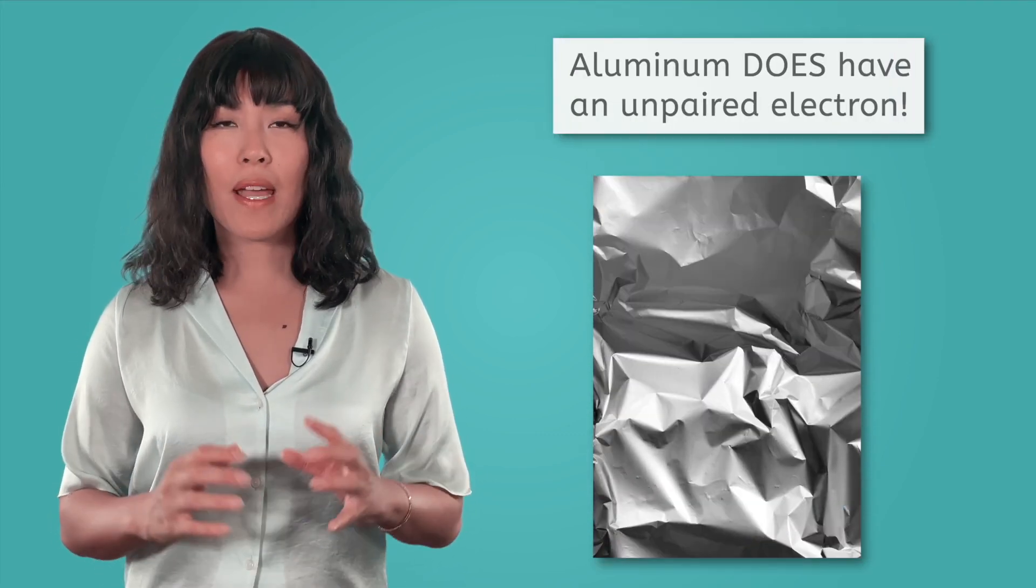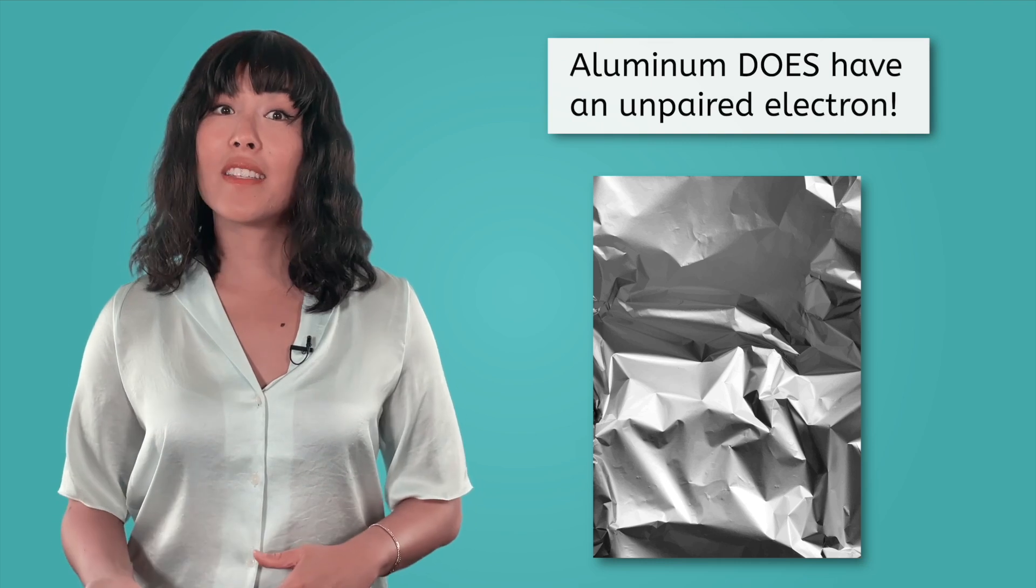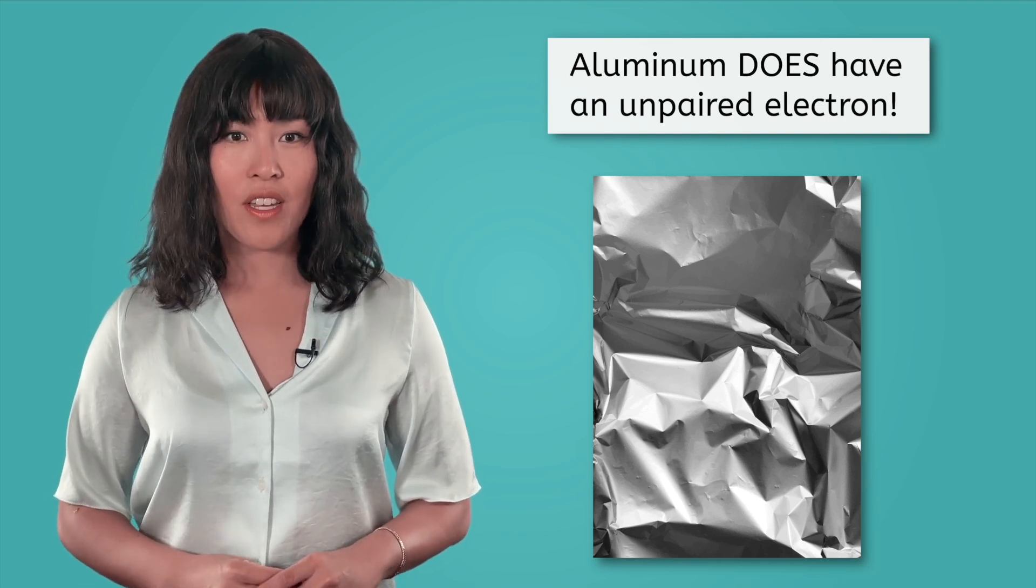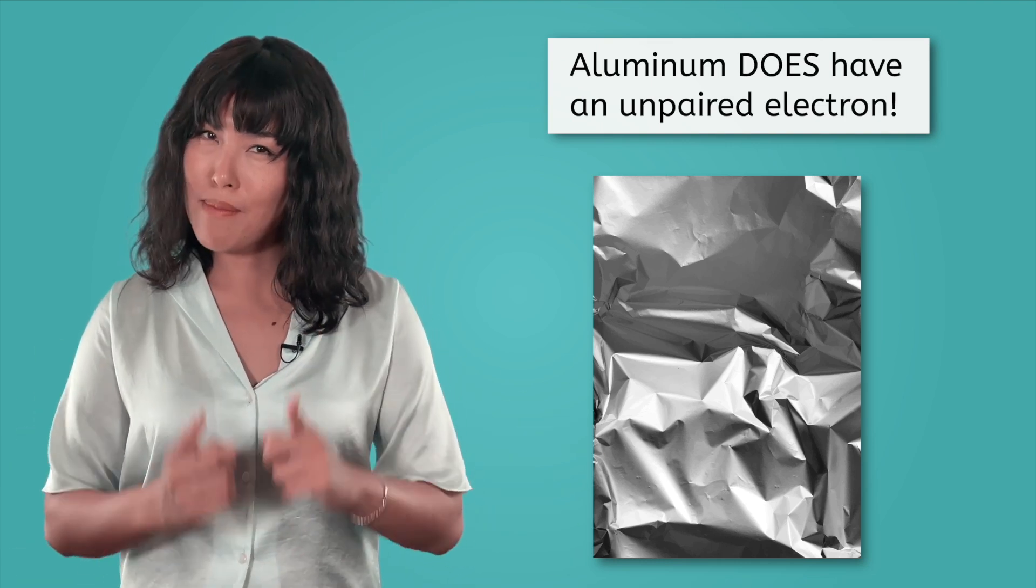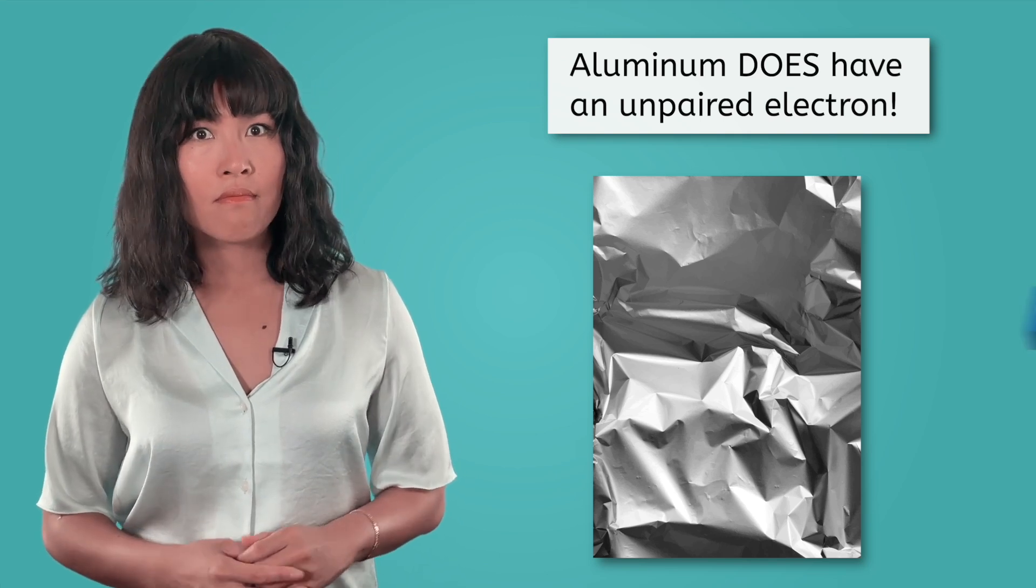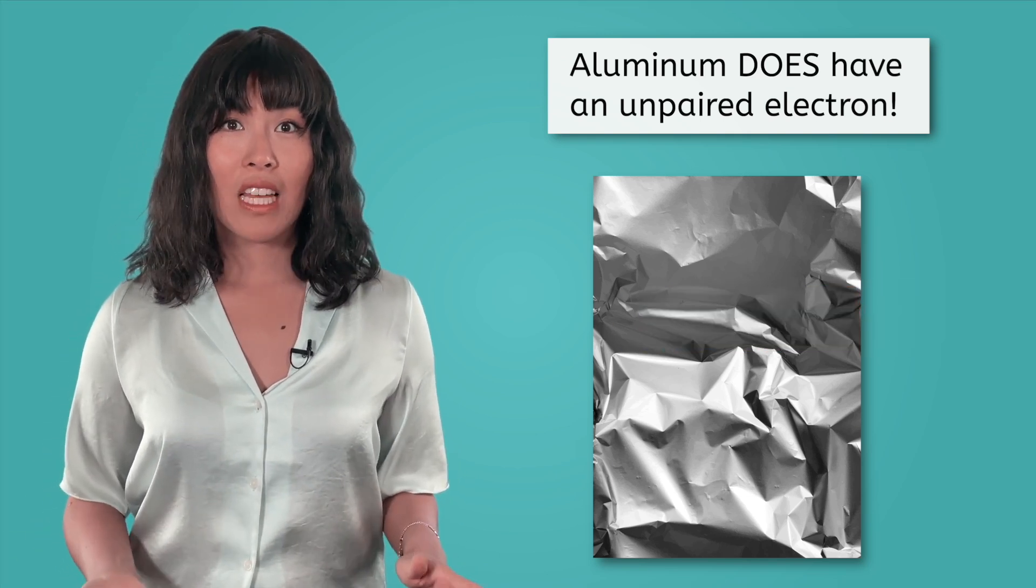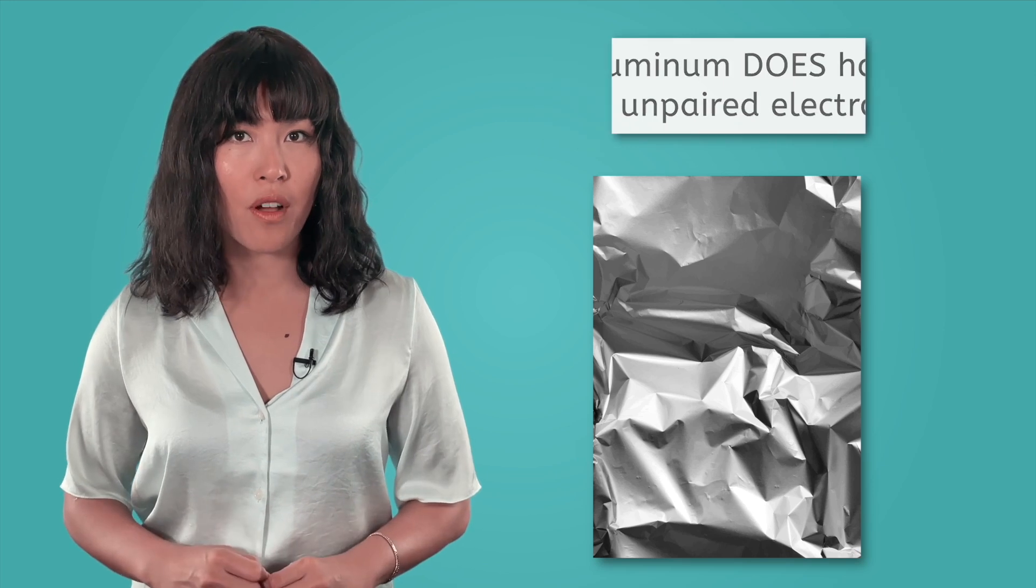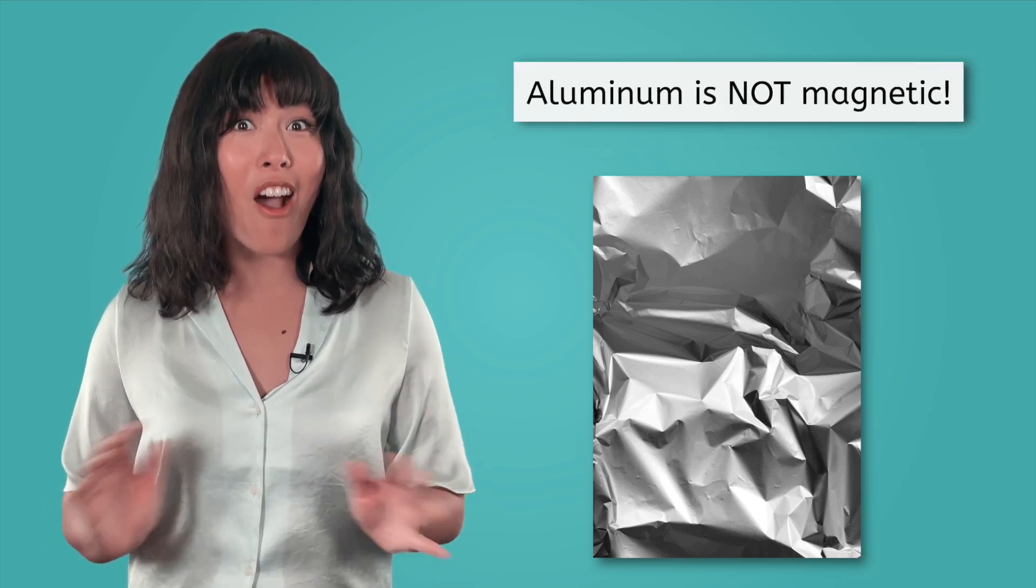Well, we've almost solved the mystery of magnetism, but there's still one problem. See this piece of foil? It's made of aluminum, which does have an unpaired electron. So should my magnet be attracted to it? What? Apparently not. Even though its atoms have unpaired electrons, aluminum is not magnetic.